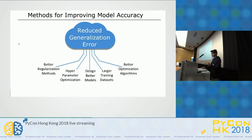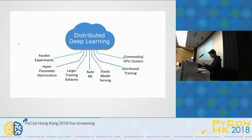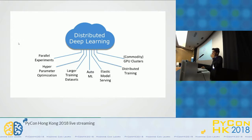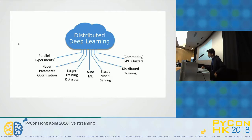Distributed deep learning is more about larger training datasets, automated machine learning, and elastic model serving. Elastic model serving is a model where we try to make some changes and it reverts back to its original model, so we can get back to a similar baseline even if the result isn't great after making changes. This is why we should use a distributed system for deep learning.